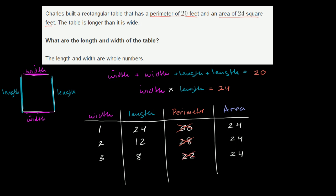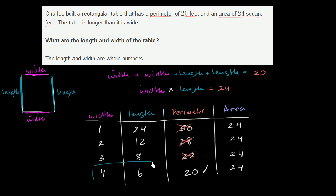What about 4 and 6? 4 times 6 is 24. And what's 4 plus 4 plus 6 plus 6? That's 8 plus 12, which is indeed equal to 20. So that works out! Our width is going to be 4 feet, and our length is going to be 6 feet.